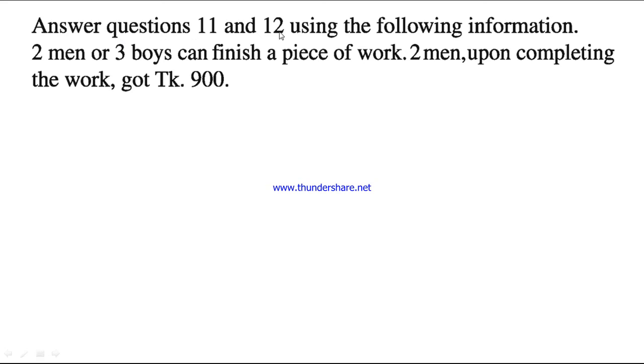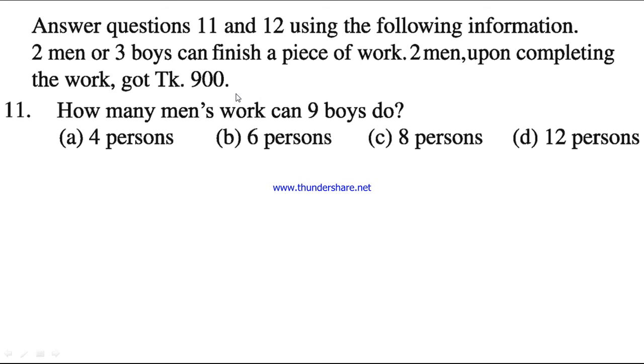Answer questions 11 and 12 using the following information. 2 men or 3 boys can finish a piece of work. 2 men, upon completing the work, got taka 900. Question number 11. How many men's work can 9 boys do? 6 persons, because 2 men is equal to 3 boys. So 3 times 3 is equal to 9, so 2 times 3 is equal to 6.